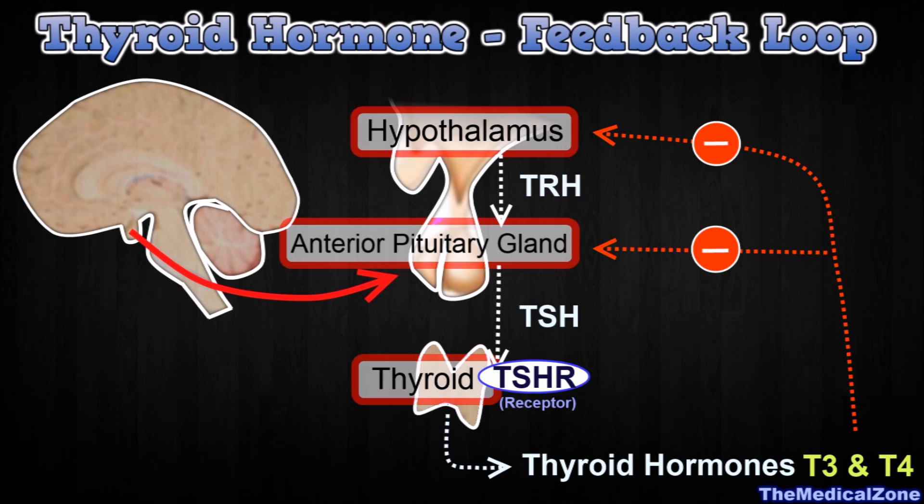This is also the mechanism to prevent both hypo- and hyperthyroidism, which means not enough or too much thyroid hormone production, respectively.